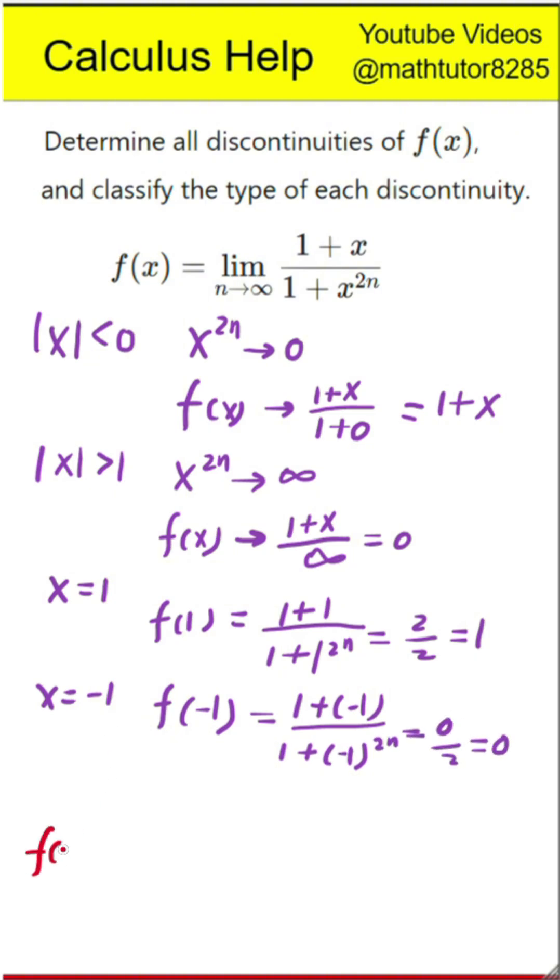Next step is to define the function in pieces. Based on our analysis, we can now write the function f of x in a piecewise way. If x is less than or equal to negative 1, the value of f of x is 0. If x is between negative 1 and 1, then f of x equals 1 plus x. If x equals 1, then f of x is 1. And if x is greater than 1, then f of x is 0.